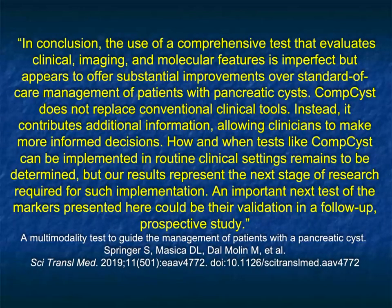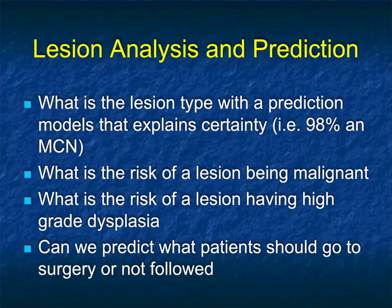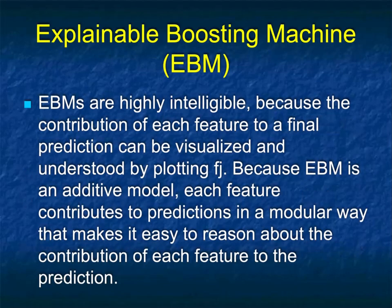Tests like COMSIS can be implemented in routine clinical settings, though when exactly remains to be determined. The COMSIS data is public domain data done at Hopkins, and we started working with Microsoft. The first question was: if you looked at all of this data, could you do as well or better? The dataset had images and also all the lab work. We asked: what is the lesion type? Can we determine whether there's a risk of malignancy? Can we determine whether there's high-grade dysplasia? Can we determine who should or should not go to surgery?